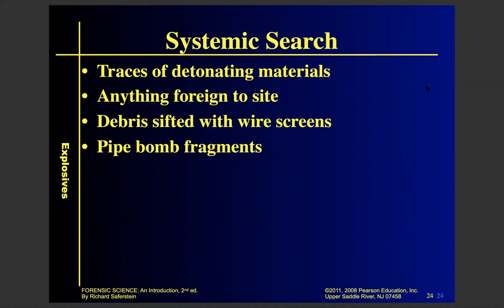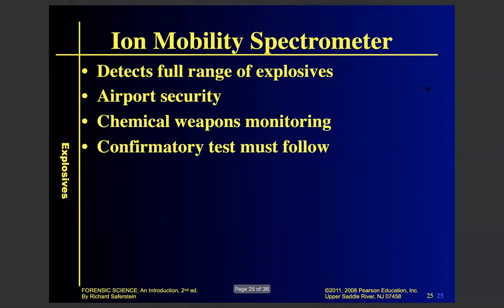At a post-explosion crime scene, investigators do a systematic search. They find traces of fuel — not all of it gets used up. Anything foreign to the site is collected and analyzed. They sift through everything with metal screens from large to small. There are also machines that can detect the full range of explosives — ion mobility spectrometers (IMS). These are quick field tests, like a preliminary screening, which can be followed up in the lab with a confirmation test.